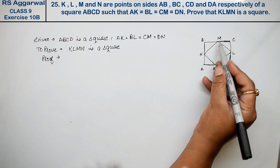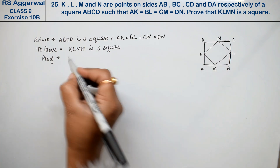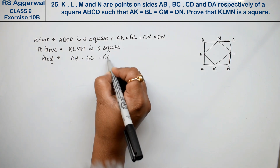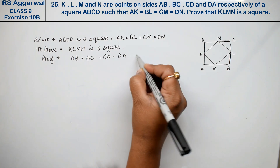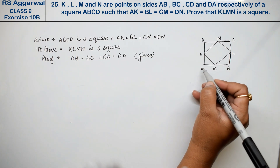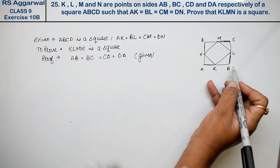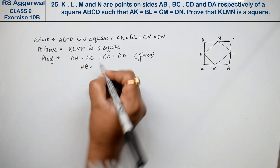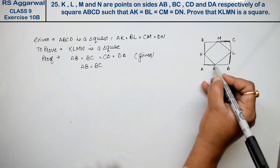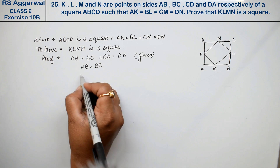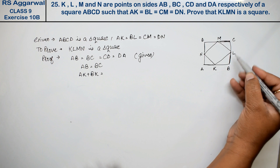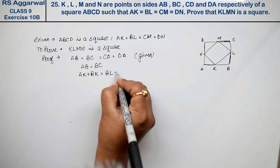How do we do this? We know AB equals BC, and CD equals DA. This is a square and this is given. Now, AB equals BC. AB can be written as AK plus BK, and BC can be written as BL plus CL.